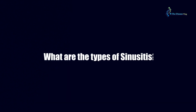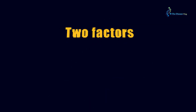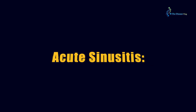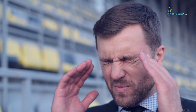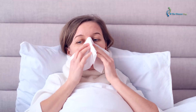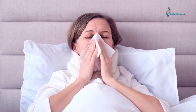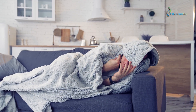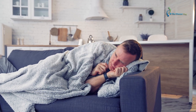What are the types of sinusitis? We divide sinusitis into four types based on two factors: the duration they last and the pathogens that cause the infection. Acute sinusitis lasts for up to four weeks. Symptoms of acute sinusitis include nasal congestion, pain in the face, and a decreased ability to sense smell. This infection is caused by viruses, just like the common cold. Subacute sinusitis occurs when symptoms last between four to twelve weeks.